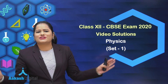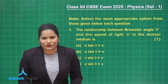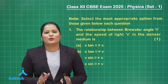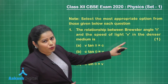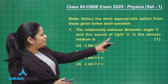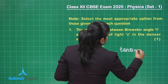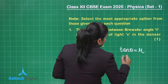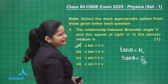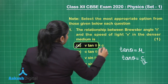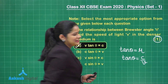Without further delay, let's jump into the very first question. The first 10 questions are objective type. Question 1 is based on Brewster's Law — the relationship between the Brewster angle theta (the angle of polarization) and the speed of light v in the denser medium. The relation is tan(theta) equals mu, the refractive index, which equals c/v. Rearranging gives option 1 as the correct answer, fetching one mark.